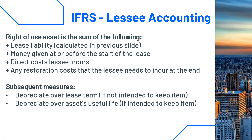Now let's talk about how to calculate your right-of-use asset. It's essentially the sum of your lease liability plus any money given at or before the start date of the lease, plus direct costs the lessee incurs, plus any restoration costs at the end. For depth in this area, you also need to discuss subsequent measurement — how you depreciate the right-of-use asset. If you don't intend to keep the item, depreciate it over the lease term; if you do intend to keep it, depreciate it over the useful life of the asset.